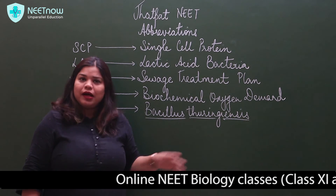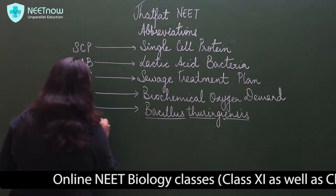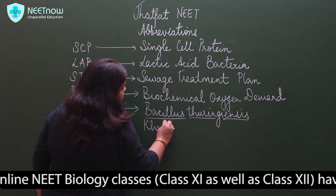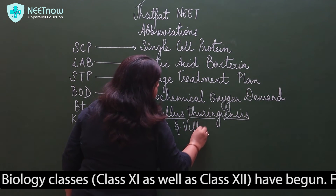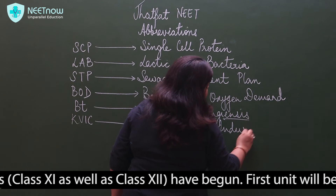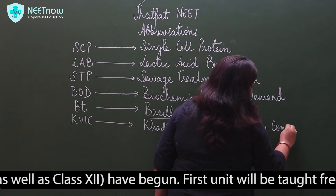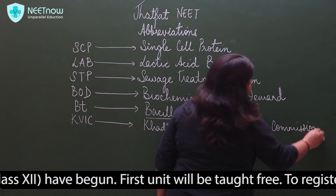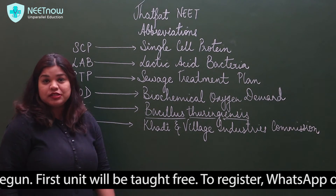Next is Bt — Bt Cotton, Bt Brinjal. Next is KVIC, which is Khadi and Village Industries Commission. Khadi, Grambhudyog — we all know that KVIC is one thing.